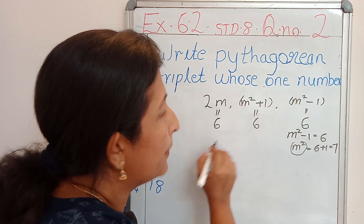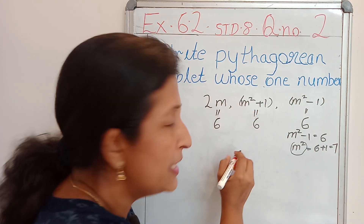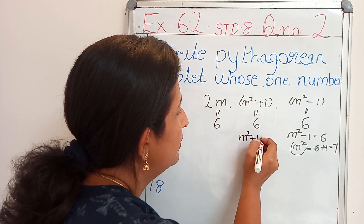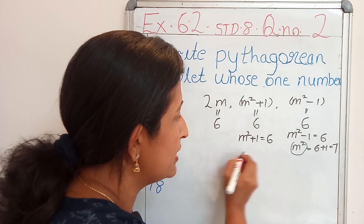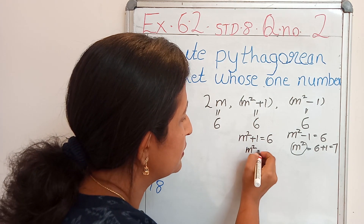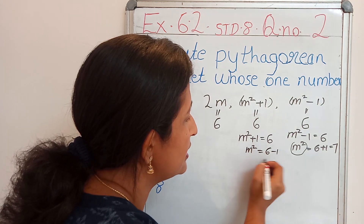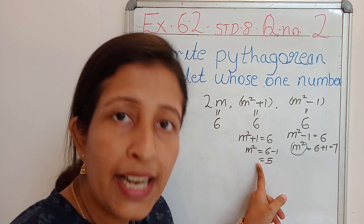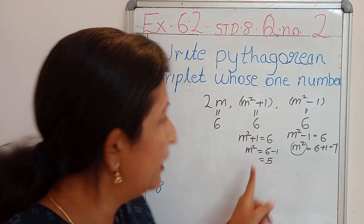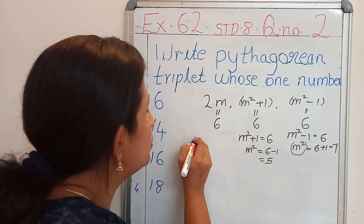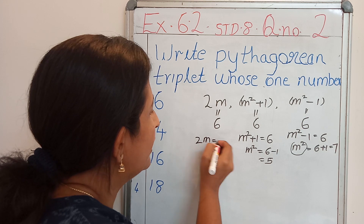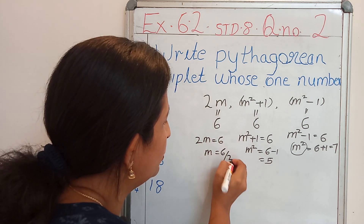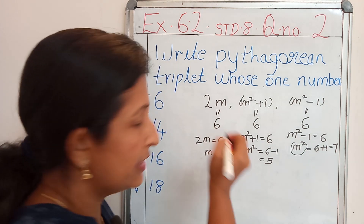Next, check that m square plus 1 will it be 6. If m square plus 1 is 6, then m square equals 6 minus 1 equals 5. In this case too, m won't be a natural number. Next we check that 2m equals 6, then m will be 6 divided by 2 equals 3.